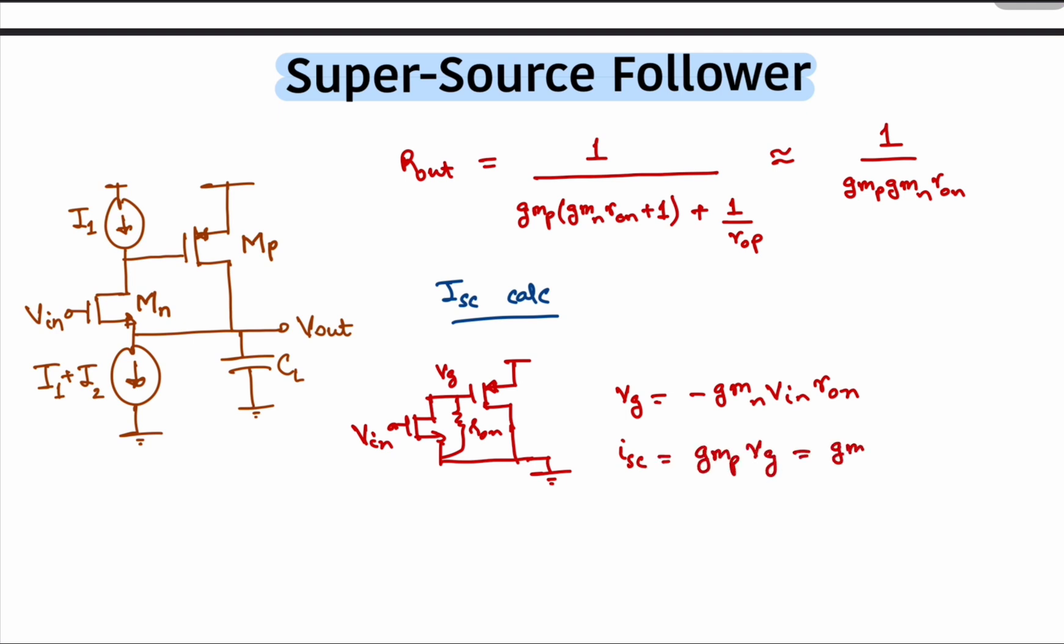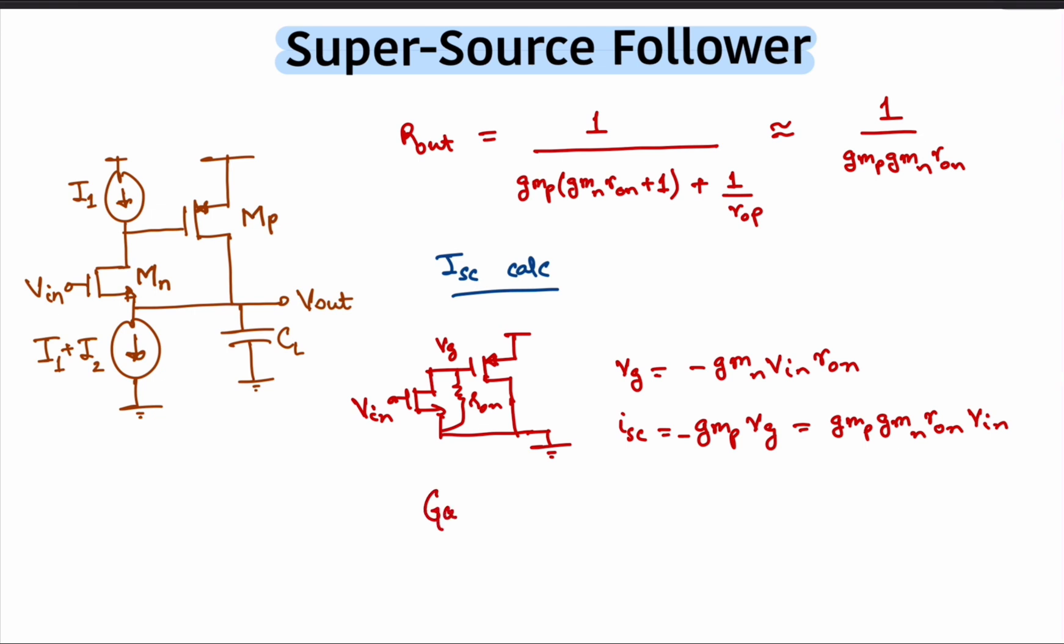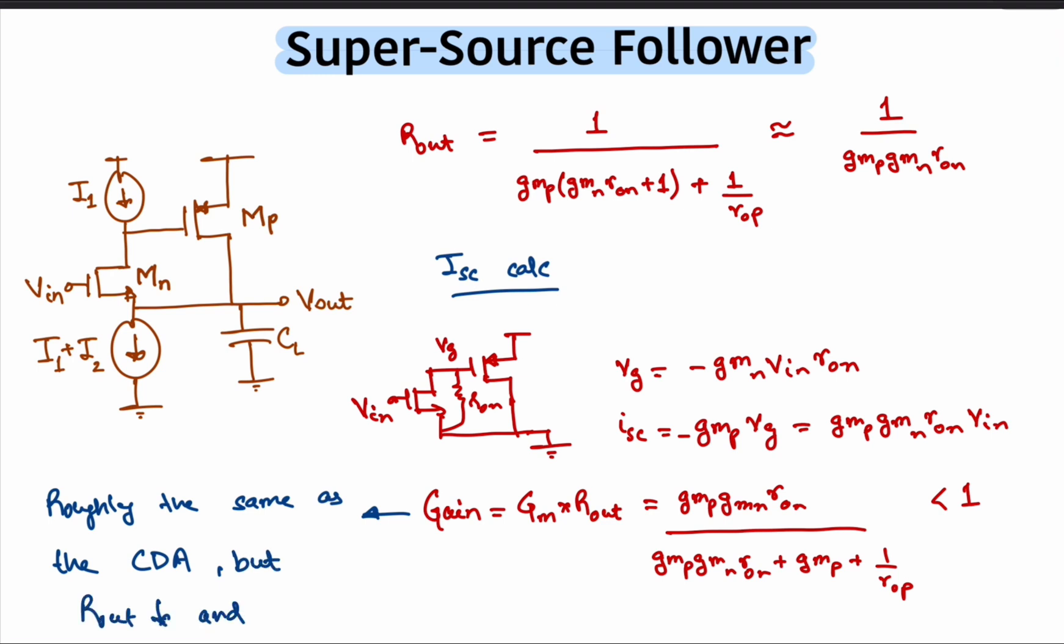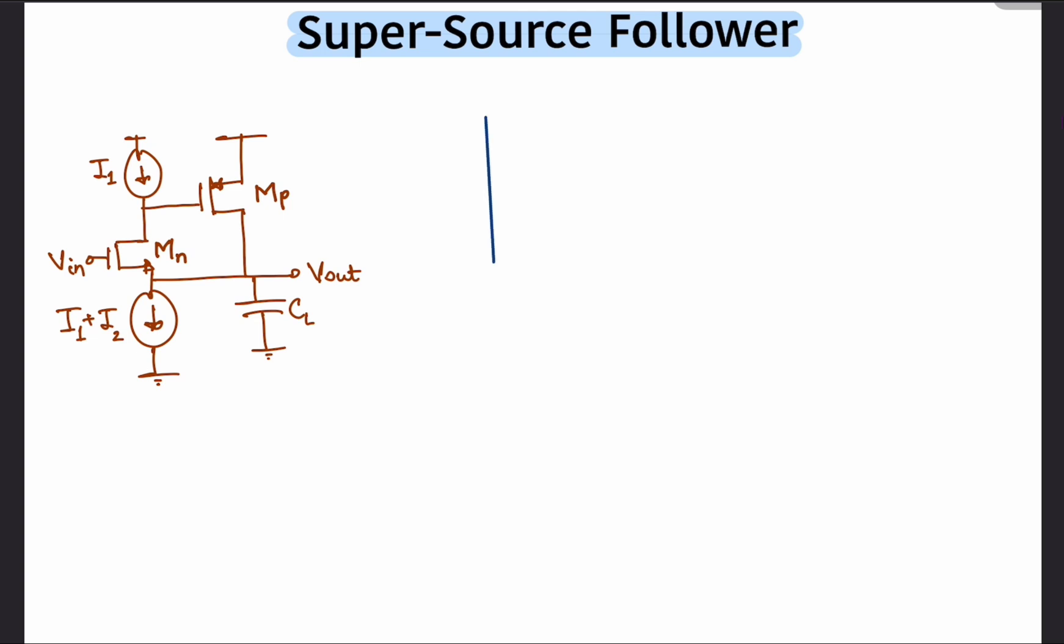From the short circuit current, we can calculate the short circuit transconductance and multiply that by the output impedance to find the gain. We see that the gain tends to unity but is less than 1, just as the source follower. However, we have an increased gm, which is the effective transconductance, and also a reduced rout by a factor of gmRn.